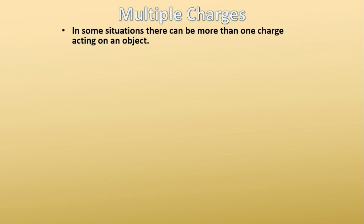Alright guys, we're going to go ahead and get started with multiple charges — in other words, advanced Coulomb's Law. The first thing we want to talk about is cases in which there are more than one charge acting on an object. So right now we've been doing pretty easy problems with just two charges repelling or attracting each other, but now we're going to start having three and possibly four.